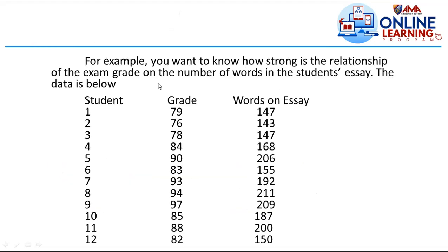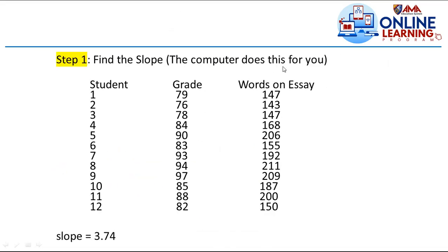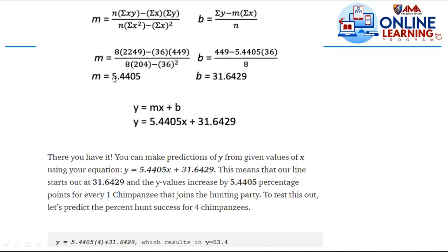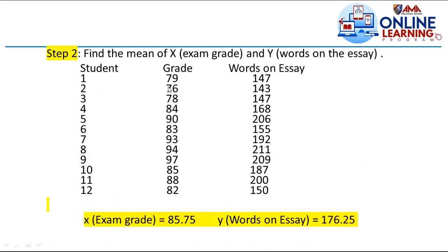Second example: how strong is the relationship between exam grade (x) and number of words in an essay (y), with 12 students. Using a computer or Excel, the slope is 3.74. The mean exam grade is 85.75 and the mean words on the essay is 176.25.